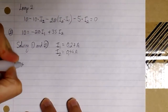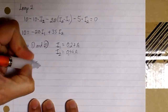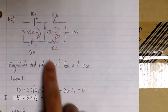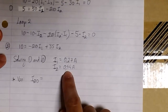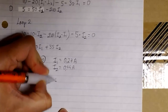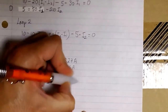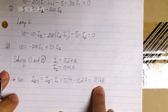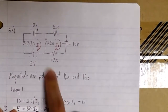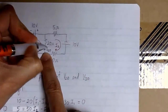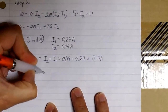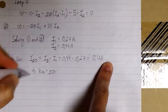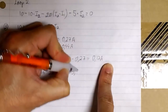Let's start with V20. For V20 we need to know the real current flowing through the 20 ohm resistor. The 20 ohm resistor belongs to both loop 1 and loop 2, so the current depends on I1 and I2 — it could be I1 minus I2 or I2 minus I1. Since I2 is bigger than I1, we choose I2 minus I1 to get a positive number, which gives I20 equal to 0.17 amps. So the magnitude of the voltage is 20 times 0.17, which is 3.4 volts.